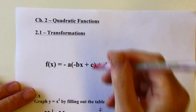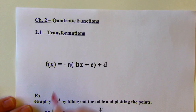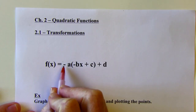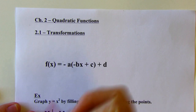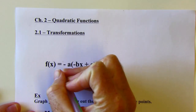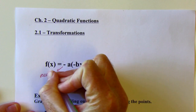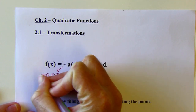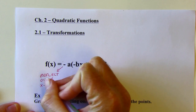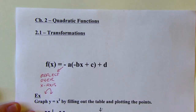This is a recap of what we were talking about last chapter with the transformations of absolute value functions. If you have a negative that's outside of the parentheses in front of a variable, it's going to reflect over the x-axis, which in essence is going to make the parabola open upside down — it's going to open downwards.